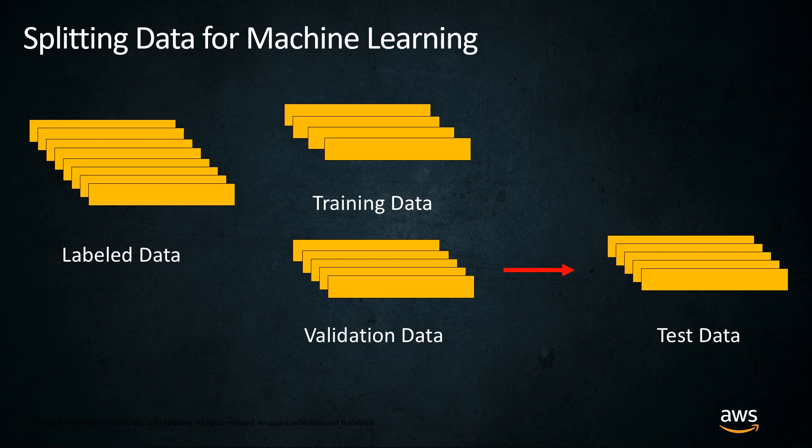There's another topic we need to know about: splitting our data for machine learning. Say I have a dataset of everyone in my hospital who has diabetes — some people do have diabetes, some don't — and I want to use a machine learning model to tell me who else is likely to have diabetes. That's a standard supervised learning problem. After I've done all my feature engineering, I'm going to split that into train, validation, and test sets. The training dataset is typically anywhere from 60% to upwards of 80 or 85% of your data.